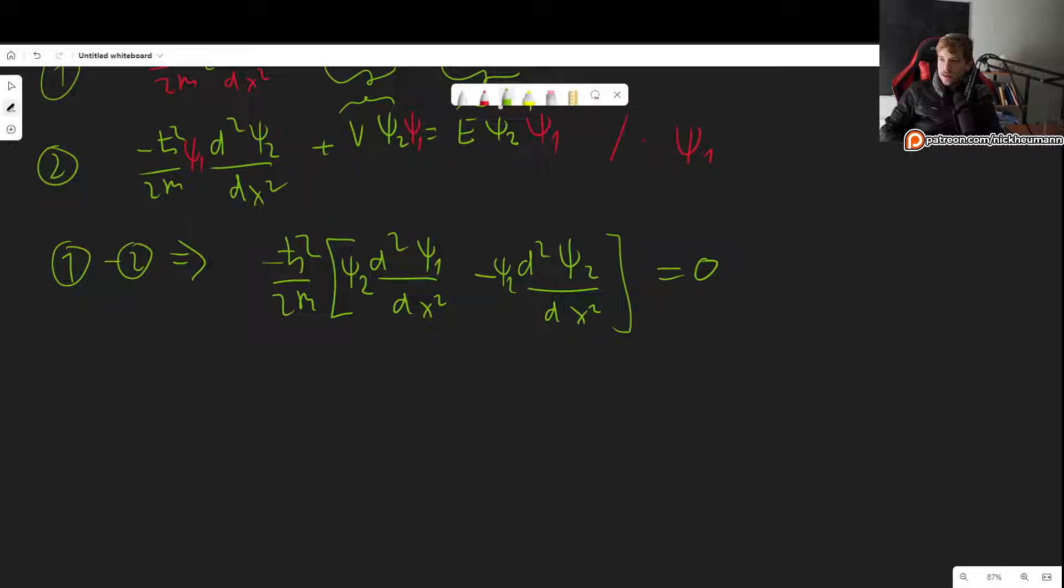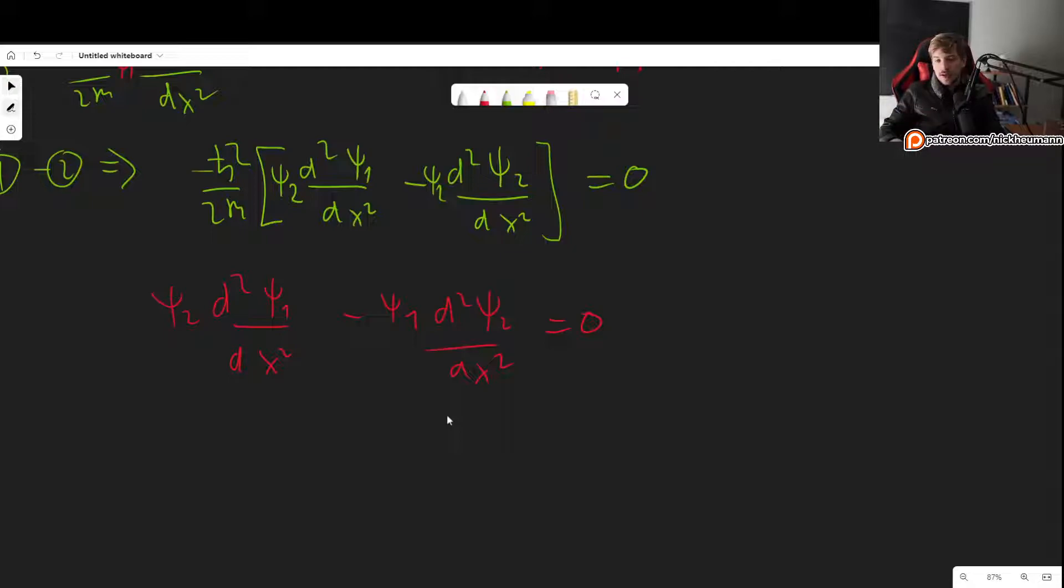Now, of course, that means that what is 0 is this part. So ψ₂ d²ψ₁/dx² - ψ₁ d²ψ₂/dx² = 0. And this is a perfect derivative. Now, you may not see it right away. And this is also a common trick that we see when we have one function times the derivative of another minus that other function times the derivative of the previous function. Maybe it's worth looking at the following expression: the derivative of something like ψ₂ dψ₁/dx - ψ₁ dψ₂/dx.